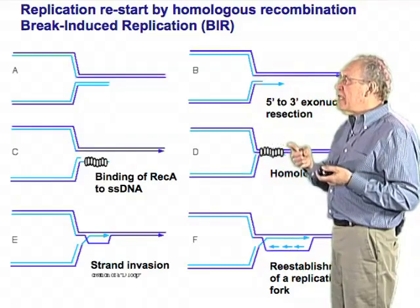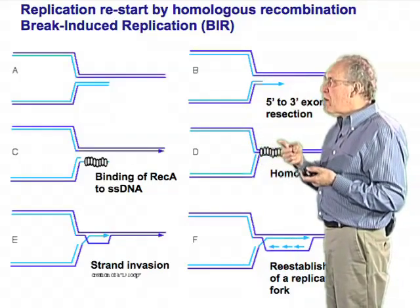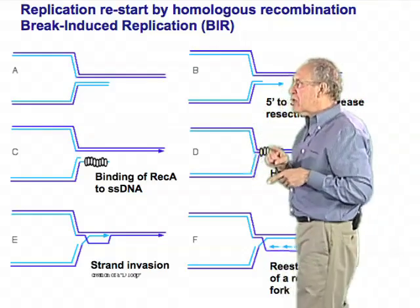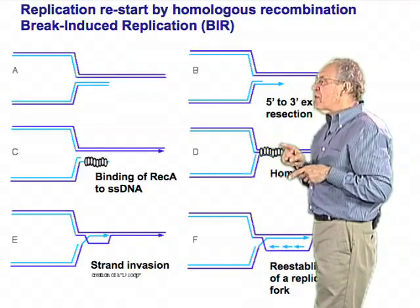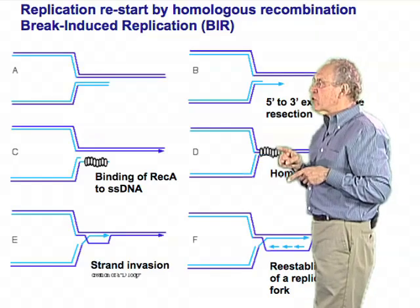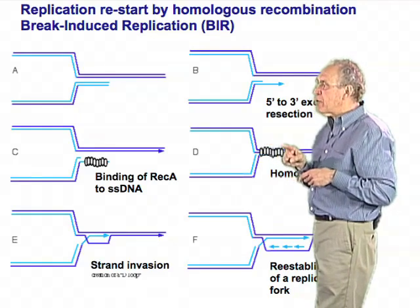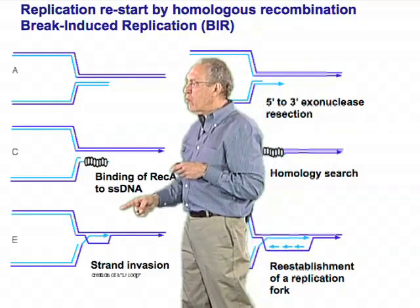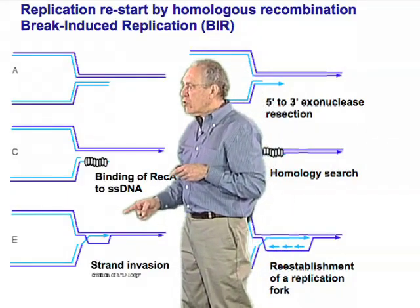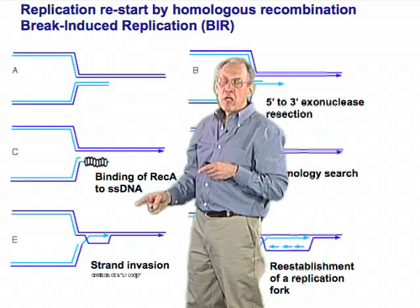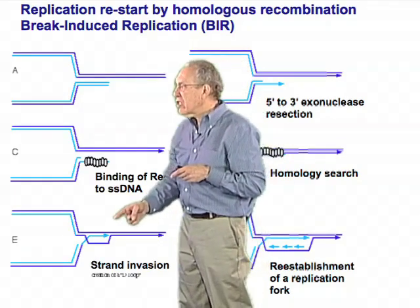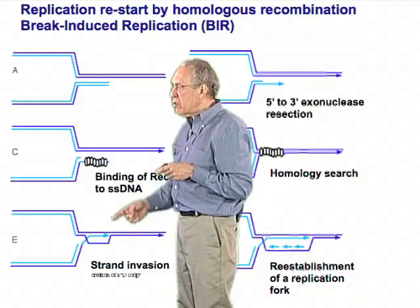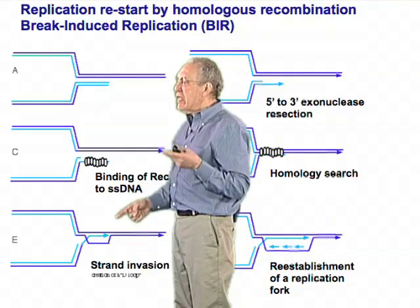When it finds those homologous sequences — which is fairly easy here because the sequences are immediately adjacent as the two sister chromatids are being replicated simultaneously — the filament engages not only the single-stranded DNA but also the double-stranded DNA template. It carries out an exchange of base pairs in which the invaded single strand is now base-paired to the template, creating a displacement loop, or D-loop, which is the beginning of a recombination event.